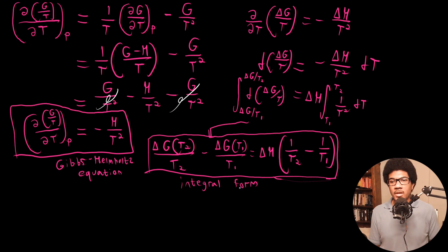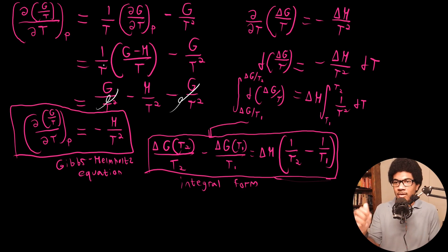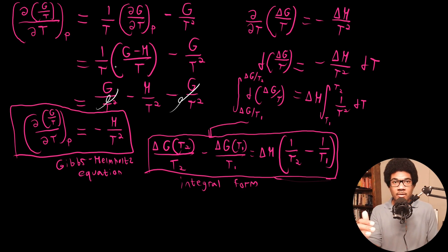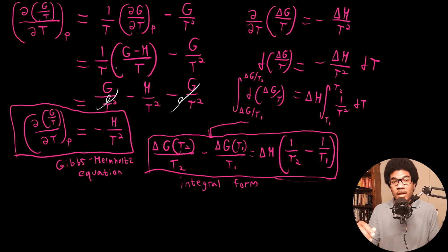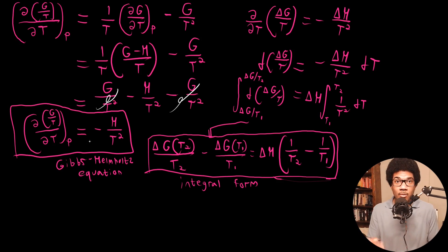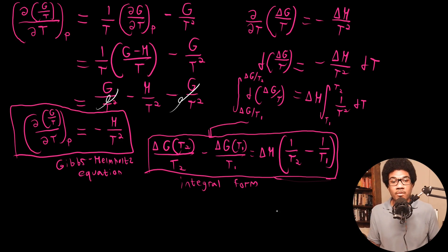Basically, what we did here was start from general relationships for the Gibbs energy relating to entropy, use those relationships to derive this explicit change for the Gibbs energy with respect to temperature, and that's where we get the Gibbs-Helmholtz equation.